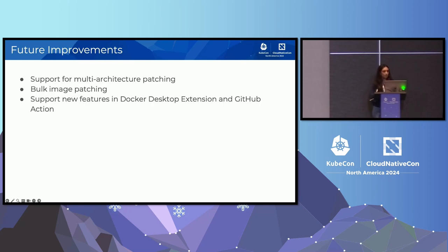Some future improvements that we want to work on include adding support for multi-architecture patching. Right now you have to patch every architecture of the image separately, but we want to be able to do that all at once. Similar to that, we want to add support for bulk image patching. And finally, we also want to add support for newer features in our Docker Desktop and GitHub Action integrations, such as updating all outdated packages.